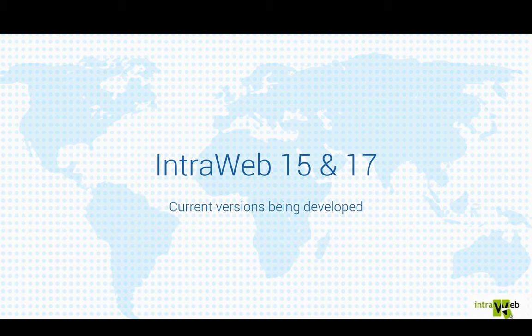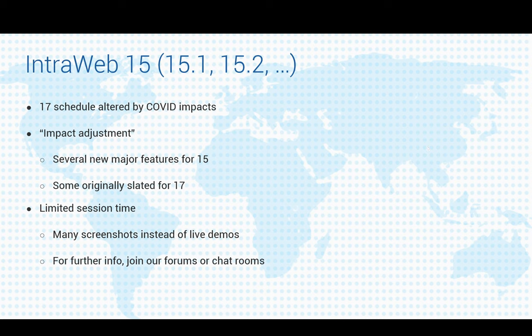So where are we today? We currently have two versions being developed in parallel. The main version is IntraWeb 15, which is the version being deployed to our customers. We also have version 14 under maintenance mode, with possible new releases for sensitive fixes when customers can't upgrade. Version 17 has been under development since 2018, but the schedule was severely altered by COVID and we needed to make some adjustments. We added several major new features in 15, and some features planned for 17 were also implemented in 15.